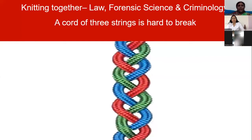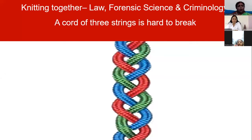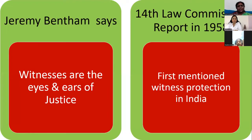It's important that we have lawyers, forensic scientists, and criminologists all working together — a cord of three strings is really hard to break. We need to understand how we can work together with public prosecutors, improve our skills and knowledge, and work with witnesses. These witnesses are the eyes and the ears of justice. We need to protect them and encourage them to work with the scientific team and police officers to help in this investigation.